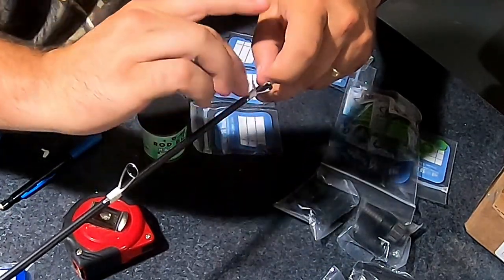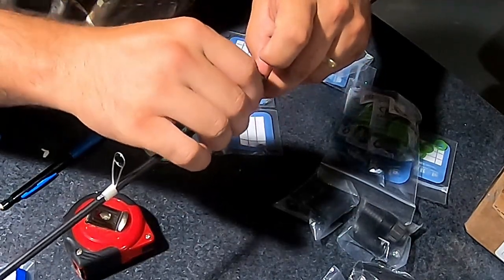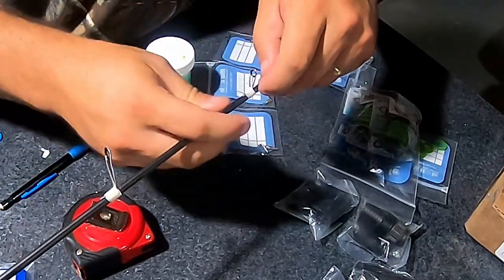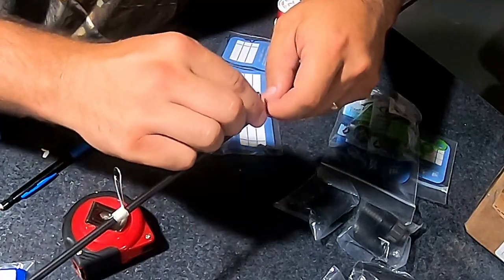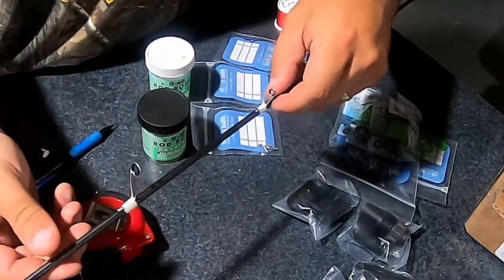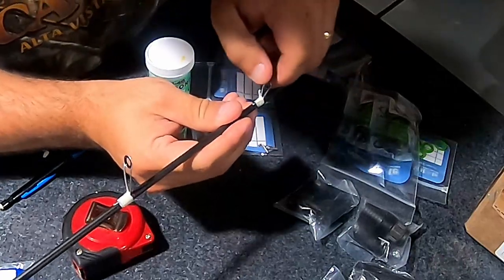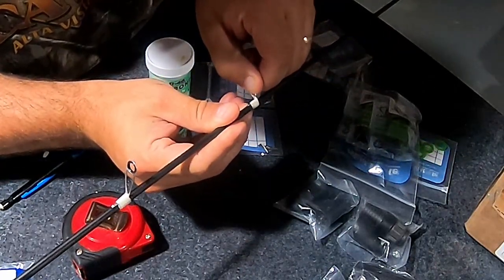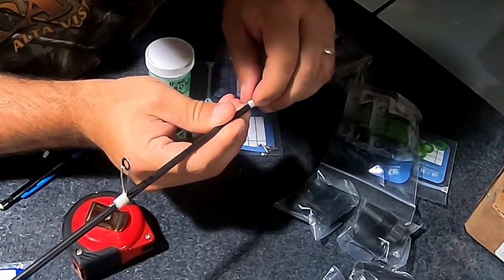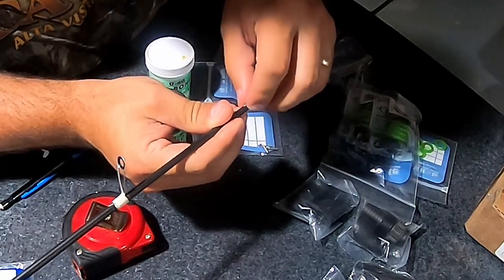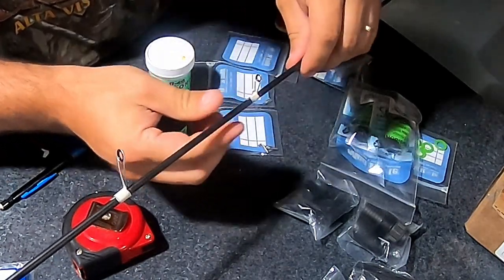Once we know about where our guides are going to go, we're going to take our measurements from the tip of the reel, and I'll measure out and make a mark with my rod building pencil and lay all those out from reel to tip. Once I get all those laid out, I'm going to kind of eyeball it, see if it looks about like I wanted. On this one, I ended up adding another guide.